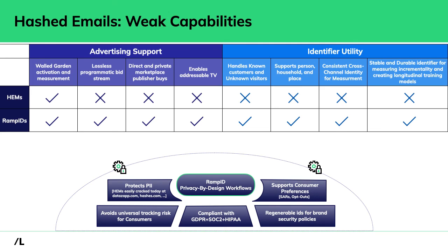We work through privacy-by-design workflows every single day, addressing global regulations. In fact, it's not HEMs but RampIDs that Carrefour is using to expand their data collaborations through retail and CPG throughout all of the EU, Singapore, Brazil, and South America. There was no other solution for their global expansion — there's no way to address all those regional regulatory disparities with HEMs. From a global capability point of view, HEMs are simply not supported in many parts of the world.